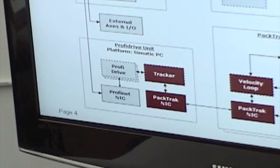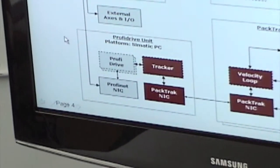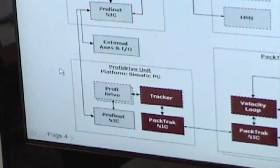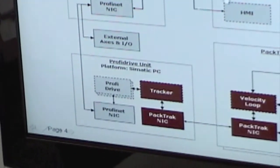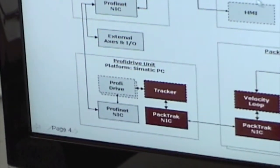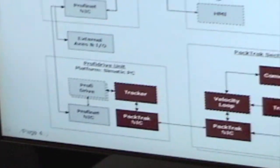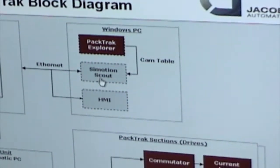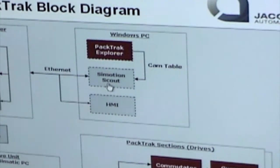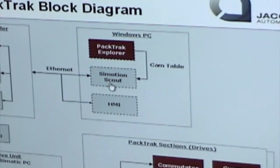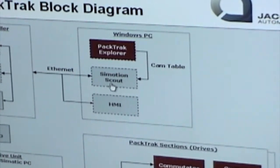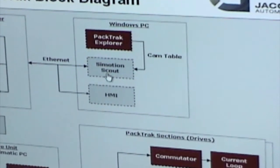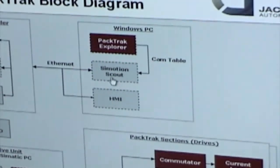From ProfiDrive's perspective, it looks like you're talking to five individual things. And when you go back up into Scout and program this thing, it's all axis-based. So this is a six-axis system — five PacTrack loop, one on one rotary axis — and that's all that really matters.